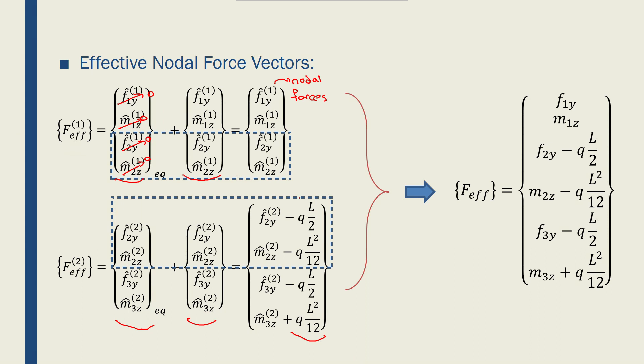Now I have to put these two vectors together to get a global effective nodal forces vector. I have f1y and m1z. Here f2y and f2y2 sum together to give f2y minus ql over 2. Then m2z1 plus m2z2 equals m2z, which is shown here from equilibrium, and minus ql squared over 12 comes here. Node 3 is not combined between the two elements, so I end up with my global effective nodal force vector.